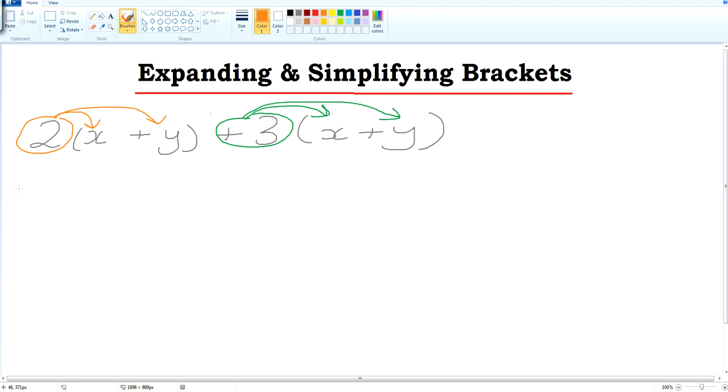Let's get cracking. So 2 multiplied by x will give us 2x. 2 multiplied by—what are we looking at here? We look at the plus. 2 times plus y will give us plus 2y.